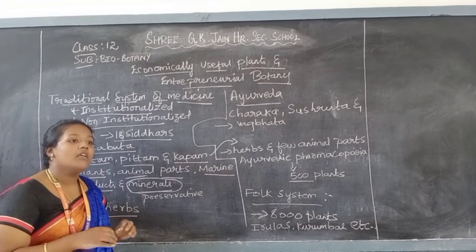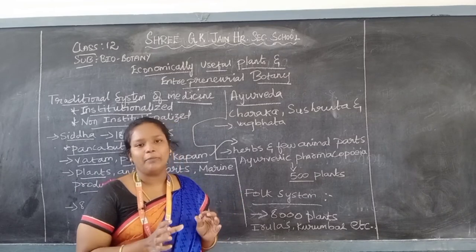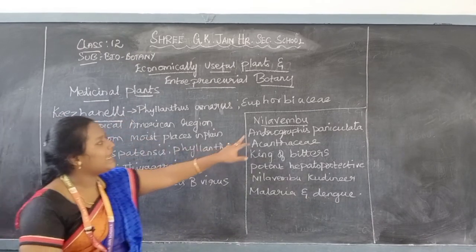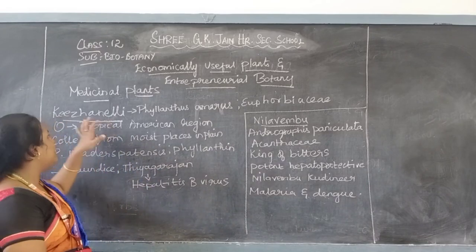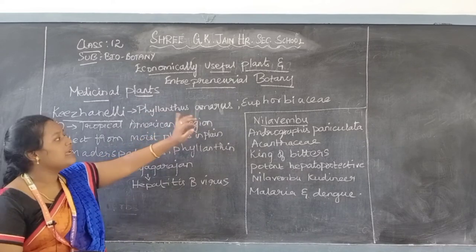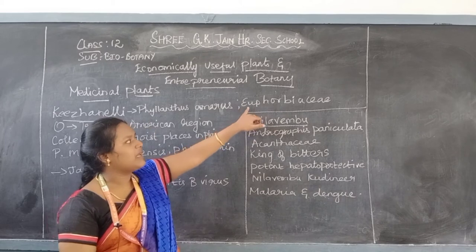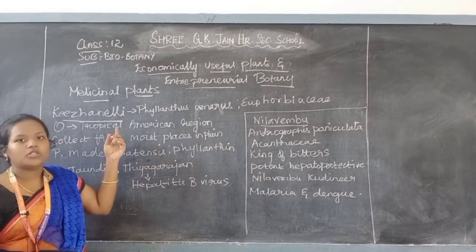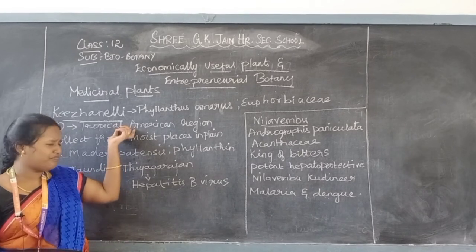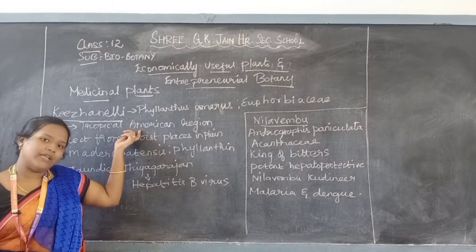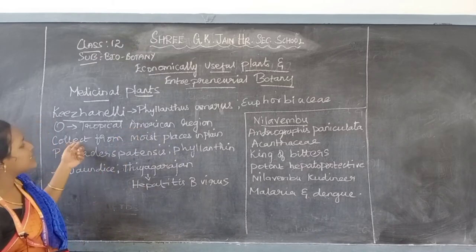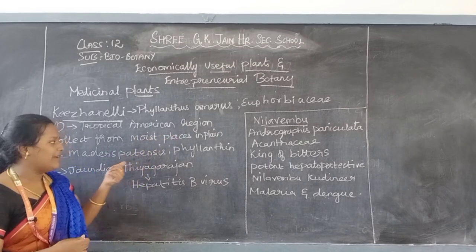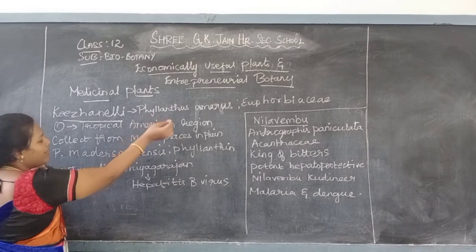Now we are going to see different medicinal plants used in day-to-day life. We will look at two medicinal plants: Keelanelli and Neelavembu. Keelanelli's botanical name is Phyllanthus amarus and it comes from the family Euphorbiaceae. Its origin is the tropical American region. It was introduced in Tamil Nadu, India, and many other tropical regions, and it is collected from moist places in plain regions.